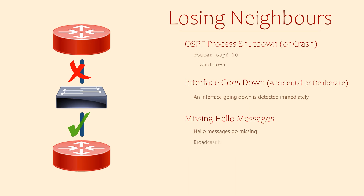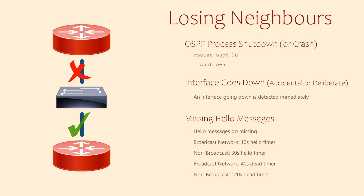By default, routers send hello messages every 10 or 30 seconds, depending on the network type — I'll explain network types in the next video. This is known as the hello interval or hello timer. OSPF routers also have a dead timer. The default dead timer is 4 times the hello interval, so that means the dead timer is 40 or 120 seconds depending on the network type. If a router does not see a hello message from its neighbour for the duration of the dead timer, it will assume the neighbour is down.